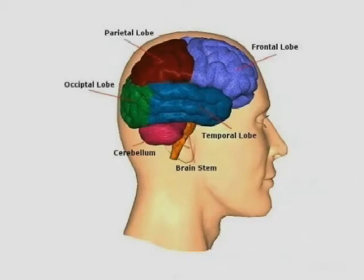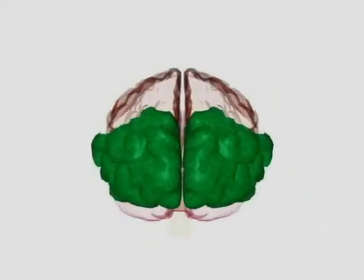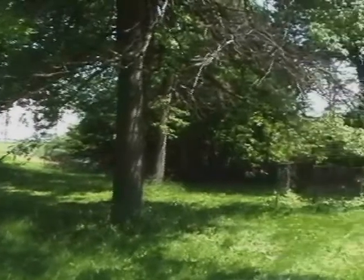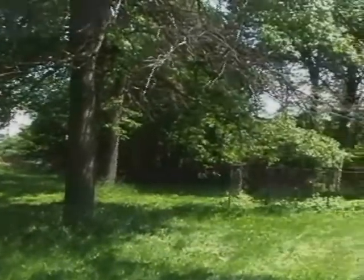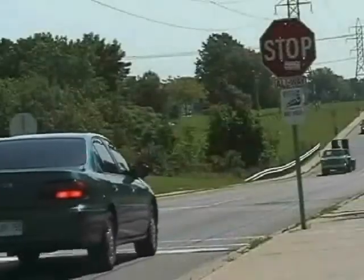At the back of the brain is the occipital lobe, which is primarily responsible for managing visual information. The occipital lobe is vulnerable to any direct blow to the back or front of the head.